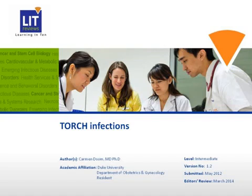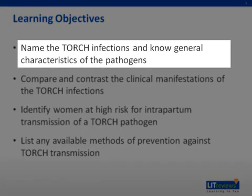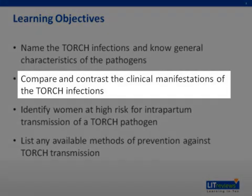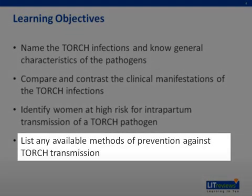This VAP presentation is about the TORCH infections. The objectives for this topic are to name the TORCH infections and know general characteristics of the pathogens, compare and contrast the clinical manifestations of the TORCH infections, identify women at high risk for intrapartum transmission of a TORCH pathogen, and list any available methods of prevention against TORCH transmission.